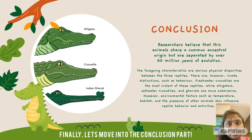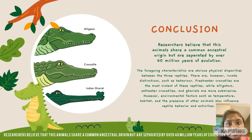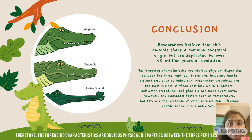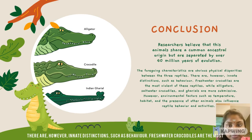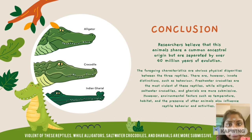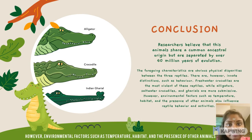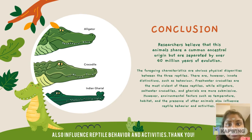Finally, let's move to the conclusion. Researchers believe that these animals share a common ancestral origin but are separated by over 40 million years of evolution. Therefore, the foregoing characteristics represent very obvious physical disparities between these three reptiles. There are also innate behavioural distinctions: freshwater crocodiles are the most aggressive of these reptiles, while alligators, saltwater crocodiles and gharials are more submissive. However, environmental factors such as temperature, habitat and the presence of other animals also influence reptile behaviour and activity. Thank you.